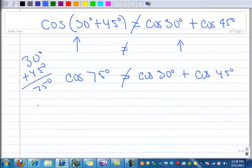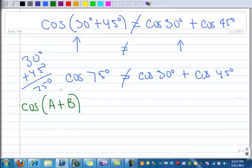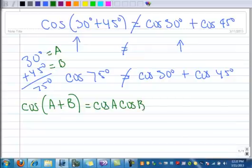So this leads us to the identity, and I'll just state this for you. We have the cosine of the sum of two angles. A is going to be angle one - that's like my A is the 30 degrees here, and B is the 45 degrees. The identity says this is equal to the cosine of the first angle times the cosine of the second angle, minus the sine of the first angle times the sine of the second angle.